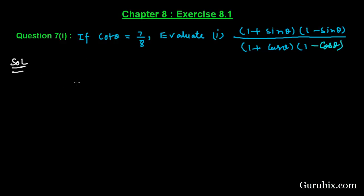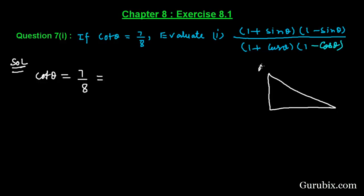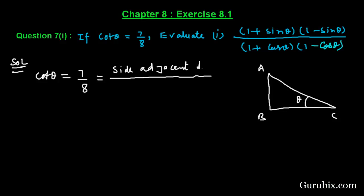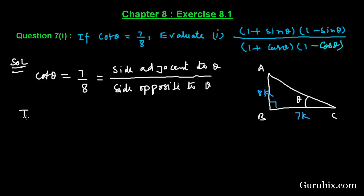First, we collect what is given: cot θ equals 7 over 8. Suppose we have a right-angled triangle ABC in which the angle is denoted by θ. Then cot θ equals the side adjacent to θ over the side opposite to θ. So BC, the side adjacent to θ, is 7k, and AB, the side opposite to θ, is 8k.